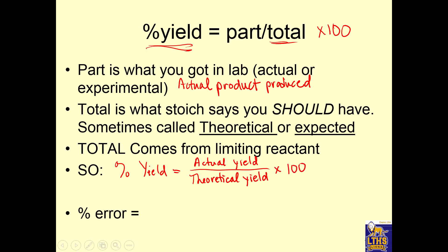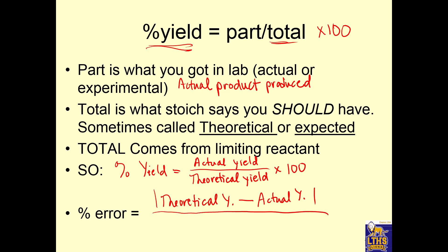You might be asking yourself — what is percent error? If you know what you should get from stoichiometry, that's theoretical yield. You subtract the actual yield, use absolute value, divide by the theoretical yield, and multiply by 100 to find how far off you were. Percent yield is like how right you were on a test; percent error is what you got wrong.